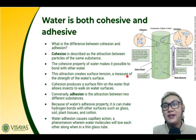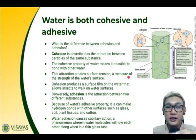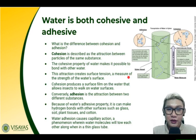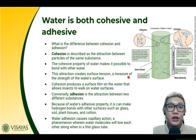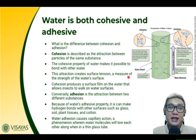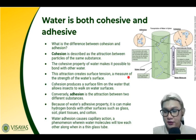Since water molecules are attracted to each other, water can form spheres, like dew drops. When you put a drop of water on a table, it will form a circle. That is because of the cohesive properties of water. Cohesion produces a surface film on the water that allows insects to walk on water surfaces — some insects are capable of striding across the water surface.